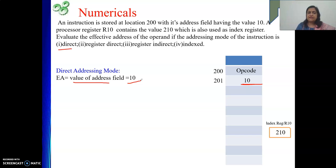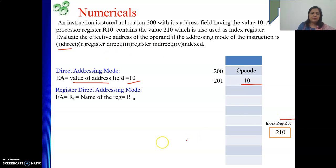Next is register direct, which is register mode. In register mode, the operand is in the register, so the address of the operand is the name of the register. The register we are using is R10. So the effective address will be the name of the register, which is R10.